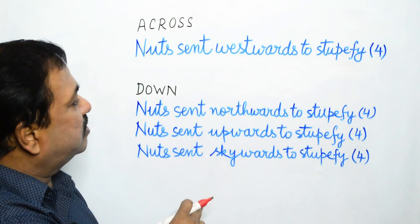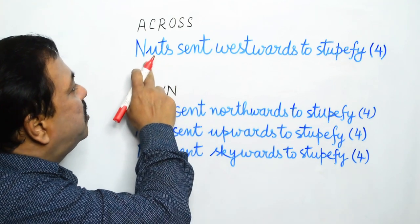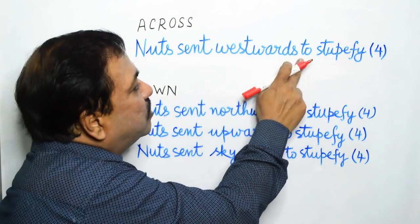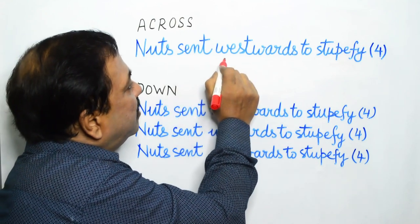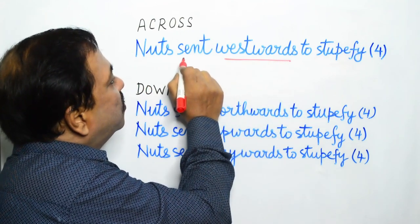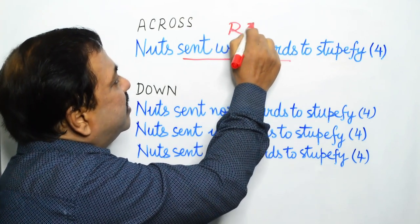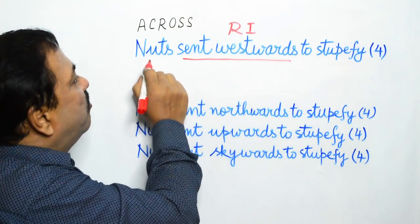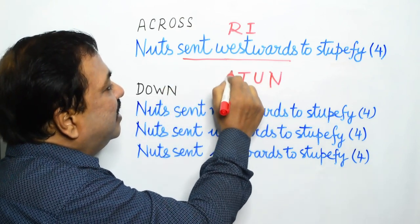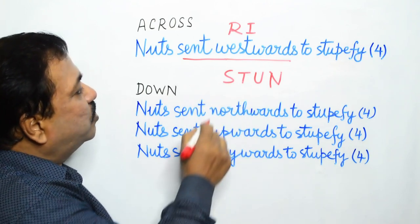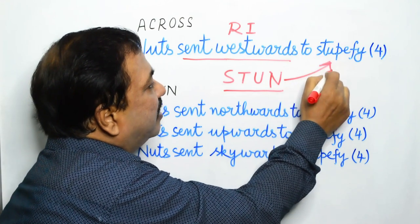Now here we are having four clues more or less similar to one another. Let's see the first one: Nuts sent westwards to stupefy. This is an across clue because of the word westwards. So sent westwards is the reversal indicator, and what is sent westwards is nuts, N-U-T-S. So what we get? We get the word stun, which means to stupefy. And this is our answer.